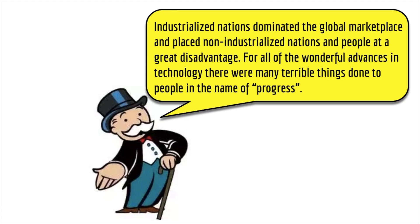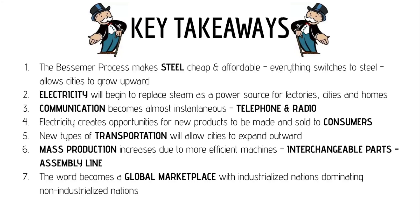Things are happening very quickly. Industrialized nations are going to dominate the global marketplace, and countries that did not industrialize are going to be at a huge disadvantage — something we'll talk about more in our next unit. For all the wonderful advances in technology, a lot of terrible things are going to be happening to people in the name of progress. When we study imperialism next, we'll see some of that. We already know that working conditions and living conditions are pretty terrible, and while they'll get a little better, industrialization does have its dark side.